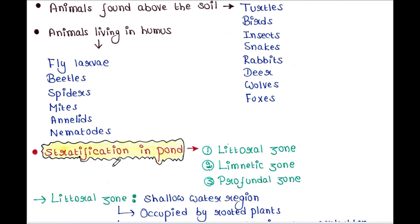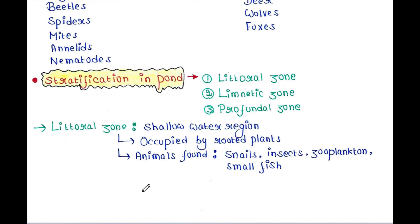Next is stratification in a pond. It has three main layers: the littoral zone, the limnetic zone, and the profundal zone. The littoral zone is the shallow water region occupied by rooted plants. The animals found in this zone are snails, insects, zooplanktons, and small fish.